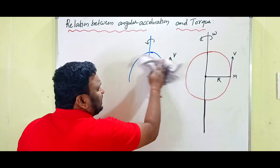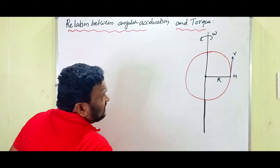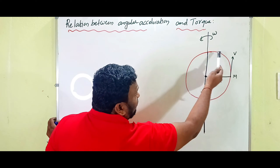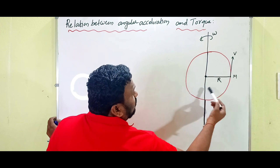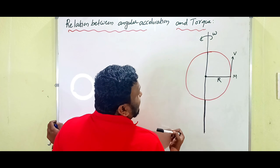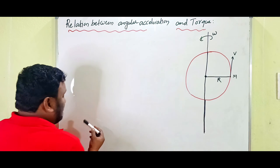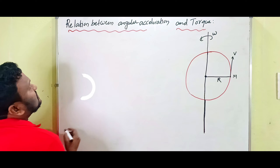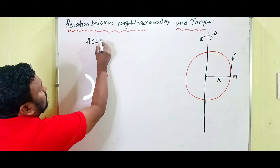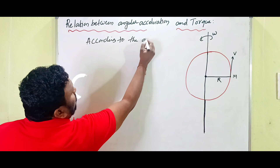Looking at the diagram: this is the body of mass M revolving in a circular path of radius R with respect to one fixed axis. This is the direction of linear velocity, and this is the direction of angular velocity. According to the definition of torque — the rate of change of angular momentum is called torque.